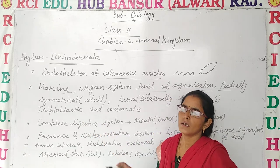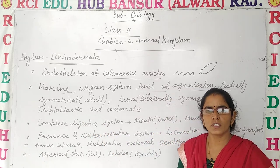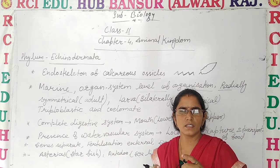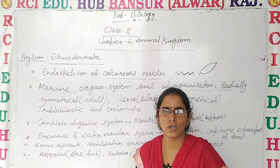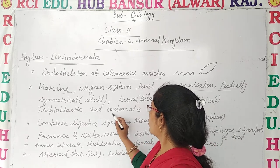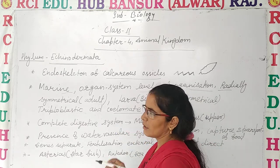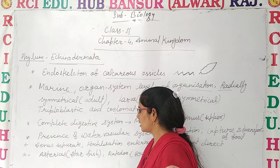They have organ system level of organization, meaning three germ layers are present: ectoderm, mesoderm, and endoderm. They are coelomates — a true body cavity is present.